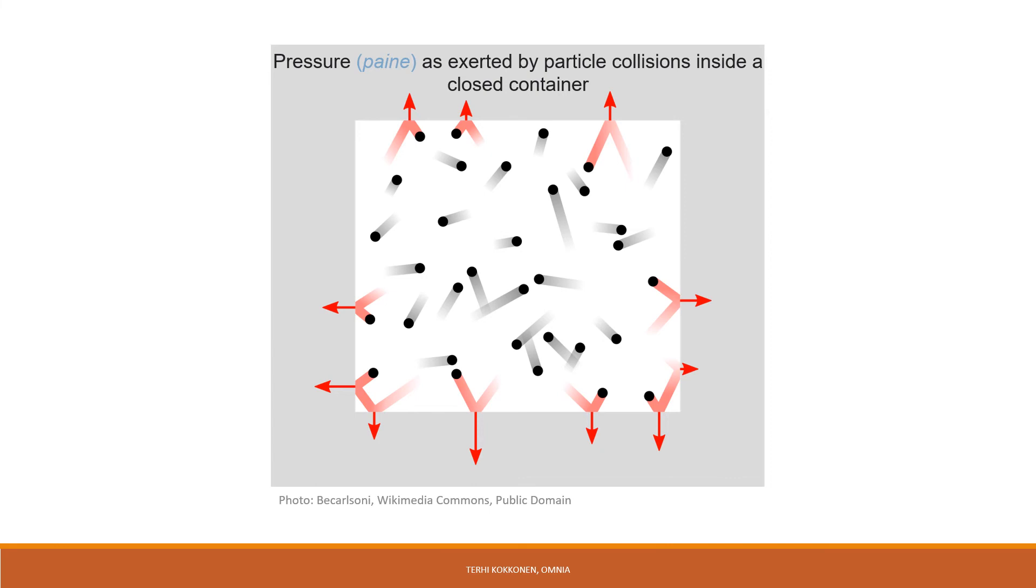Gases can be compressed, squeezed into a small volume, because there is so much empty space between atoms or molecules in the gaseous state. So transitions between the liquid and gas phase can be achieved not only by heating and cooling, but also through changes in pressure. Increasing the pressure of gas results in a transition to the liquid phase.